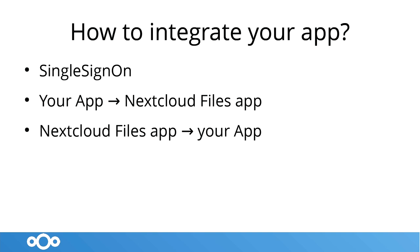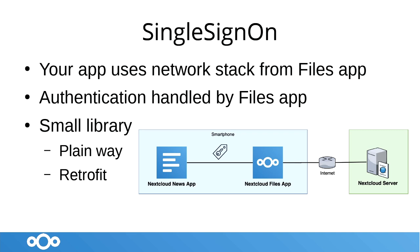I want to start with the single sign-on system, which makes developer life very easy for you. Your app can use the entire network stack from the files app, so you don't need to handle the authentication or authorization — this is entirely handled by the files app. It's a small library that you can just include.